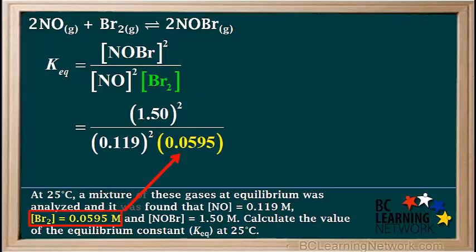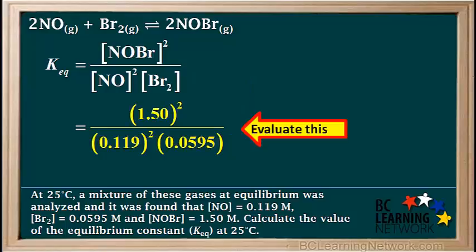Lastly, we substitute 0.0595 in here for the equilibrium concentration of Br2. And we see that there is no exponent to add for the concentration of Br2.